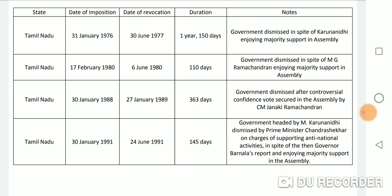Tamil Nadu: Date of imposition — 30 January 1991. Date of revocation — 24 June 1991. Duration — 145 days. Notes: Government headed by M. Karunanidhi was dismissed by Prime Minister Chandra Shekhar on charges of supporting anti-national activities, despite the then Governor Bhanu Lal's report and the government enjoying majority support in the assembly.